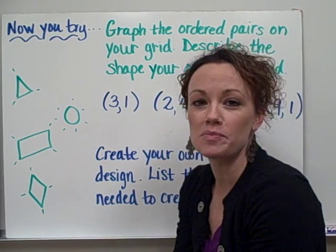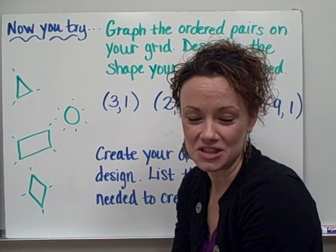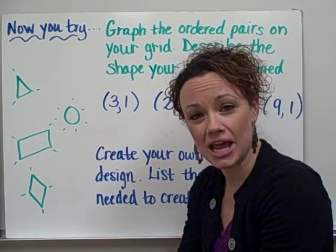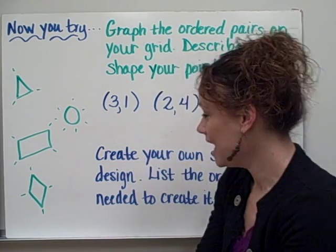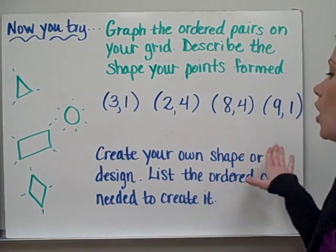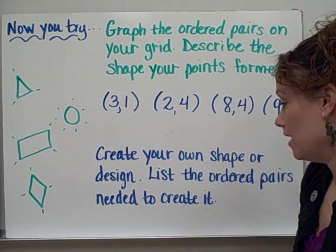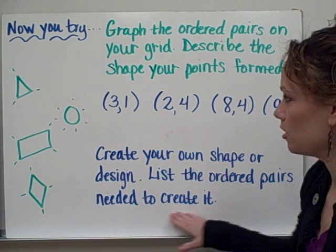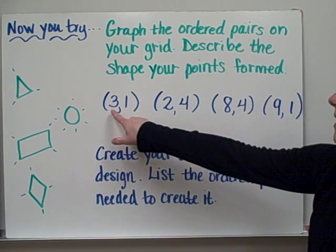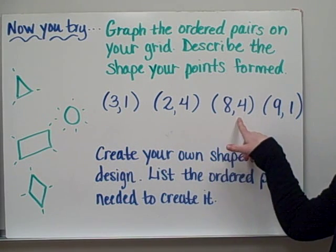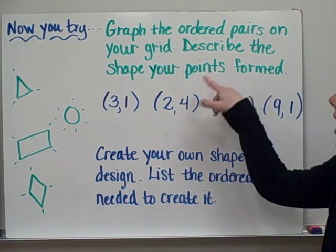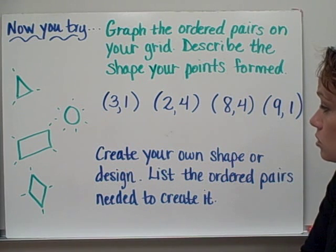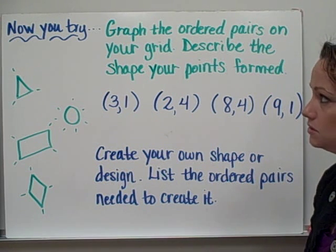And there is a shape that will be formed after you connect the lines and connect the dots of those grids. So after you've plotted your points, I would like you to describe the shape that you see. And secondly, I would like you to create your own shape or design on grid paper and list the ordered pairs that you used to create it. And that will be your second part of your homework this evening. So your points will be 3, 1, 2, 4, 8, 4, and 9, 1. And you need to describe the shape that you see after graphing those points. And then don't forget to create your very own shape on your grid paper and list the ordered pairs you used to create.